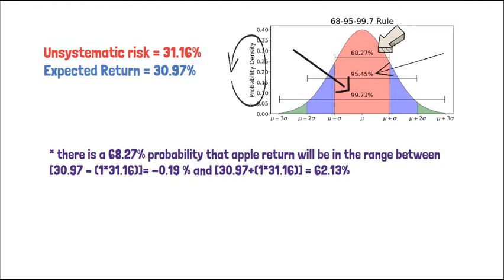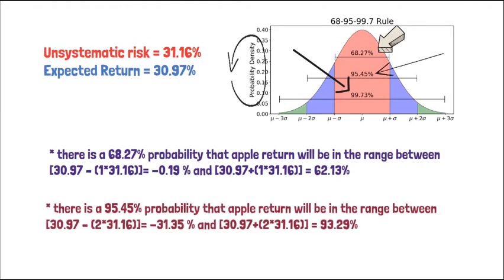Similarly, there is a 95.45% probability that return on Apple stock will be two standard deviations above or below the expected return. Or, Apple return will be in the range between negative 31.35% and 93.29%.